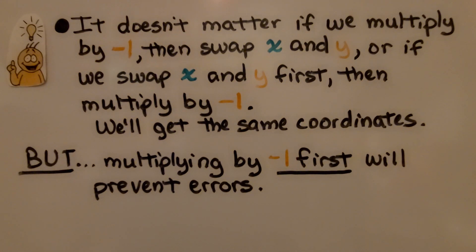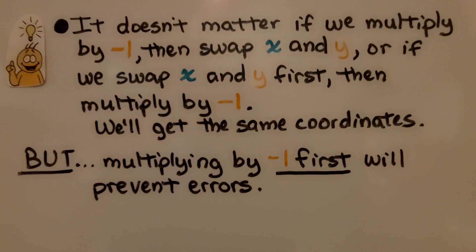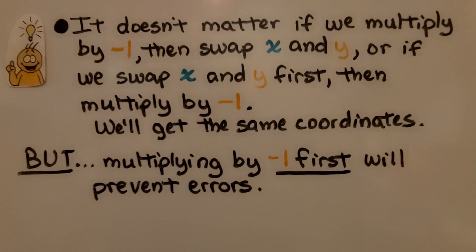The rule says for 90 degrees clockwise, multiply the x-coordinate by negative 1; for 90 degrees counterclockwise, multiply the y-coordinate by negative 1; and in both cases swap the x and y values. It doesn't matter if you multiply by negative 1 first and then swap, or swap first and then multiply by negative 1 — you get the same coordinates. However, multiplying by negative 1 first will prevent errors, so that is the preferred method.